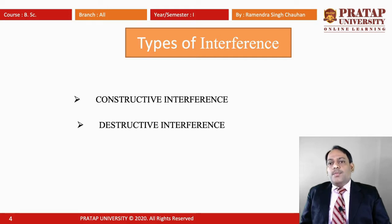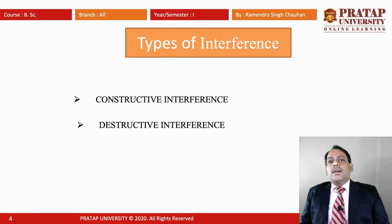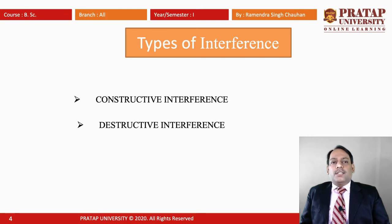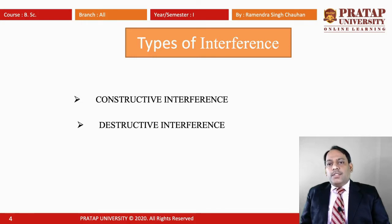What we need is the superposition of the waves. So when two coherent waves are traveling in the same direction and they get overlapped, the intensity of the region of overlapping — the region of superposition — changes and gets redistributed, and there is a distribution of maxima and minima. This type of redistribution of intensity of light is called Interference.